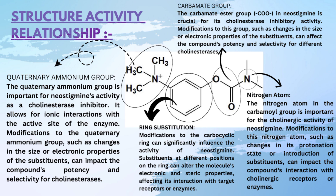Modification to the quaternary ammonium group, such as change in the size, electronic properties, or substitution, can impact the compound's potency and selectivity for cholinesterase. The second substitution is ring substitution. Modification to the carbocyclic ring can significantly influence the activity of Neostigmine. The substituents at different positions on the ring can alter the molecule's electronic and steric properties, affecting its interaction with target receptors or enzymes. Third is the nitrogen atom.